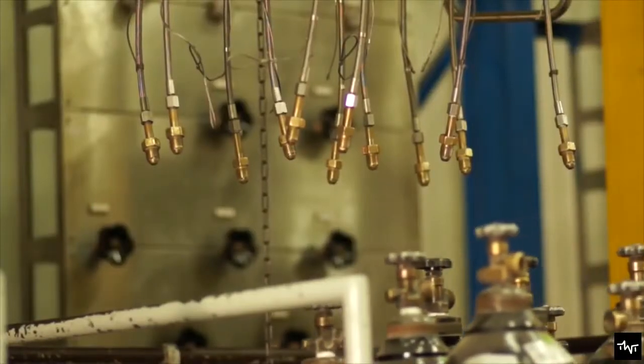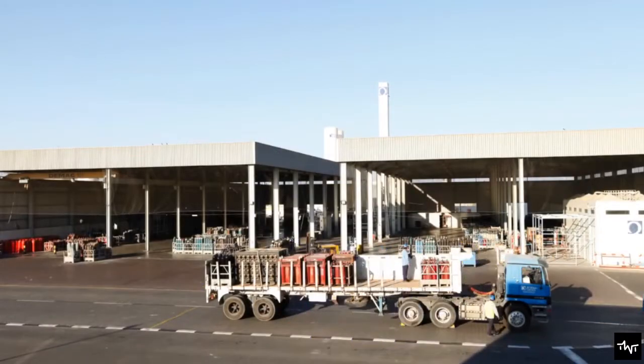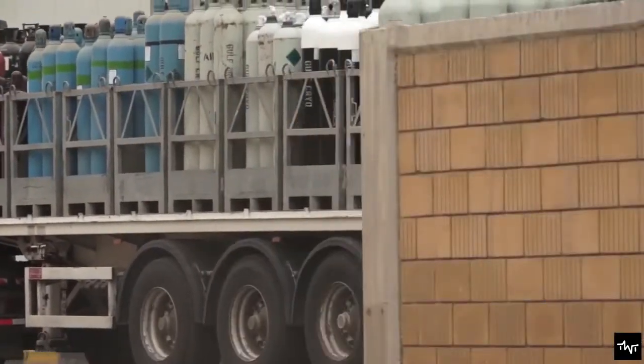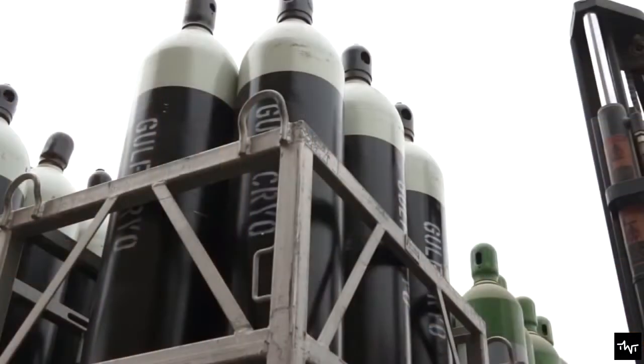After the production process, the storage of oxygen started. Oxygen can either be stored in cylinders, a vacuum-insulated evaporator, or a manifold cylinder bank.